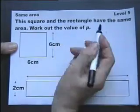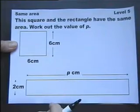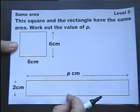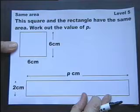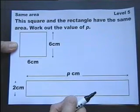This square and rectangle have the same area. Work out the value of P. Now it doesn't say these diagrams are not drawn to scale, but always assume that they're not, so measuring that is likely to get you the wrong answer.